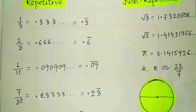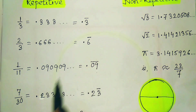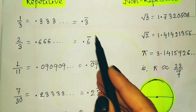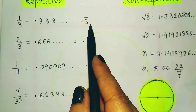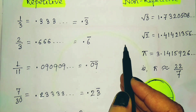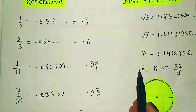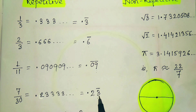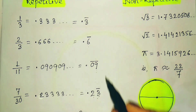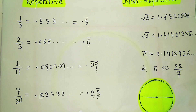The bar notation denotes where the repetition occurs. For 0.3̄, the digit 3 repeats infinitely. For 0.6̄, the digit 6 repeats. For 0.09̄, the digits 0 and 9 repeat. For 7/30, the bar is only over 3, meaning 0.2333... — that is, after 0.2, the digit 3 repeats infinitely.